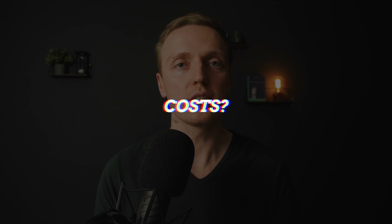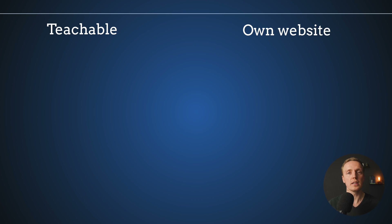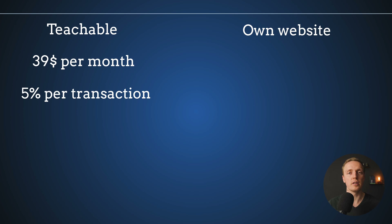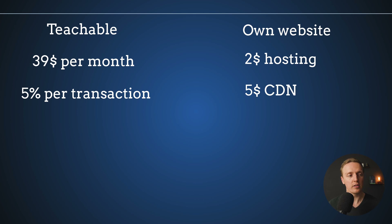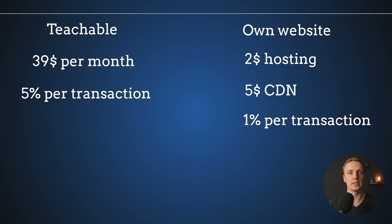Now let's compare costs. With Teachable I pay $39 per month plus 5% for every transaction. For my custom website I pay $2 for hosting, on average $5 per month for CDN, and I use the free tier of Mailgun to send emails. For payments, I use Stripe and pay 1% per transaction.